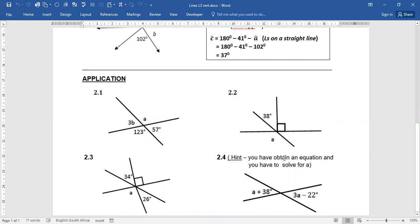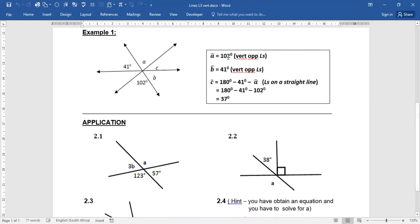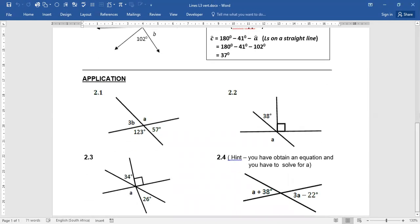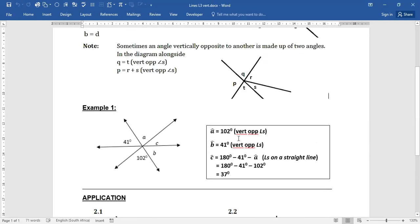We have a hint. You will obtain an equation to solve for A. So the answers are not directly given. So you need to write down your statement and a reason. Like this. You write your statement and your reason. And you solve for the unknown angles. Please complete your application to the next lesson.